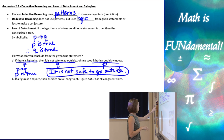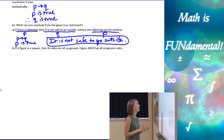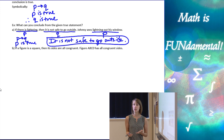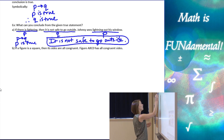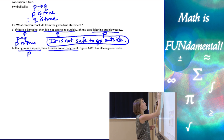Let's look at one more example. It says: if a figure is a square, then its sides are all congruent. Figure ABCD has all congruent sides. So what can we conclude? A lot of students think you can conclude that it's a square, but we have to be really careful with the law of detachment. The hypothesis is that the figure has to be a square, and the conclusion is that its sides are all congruent.